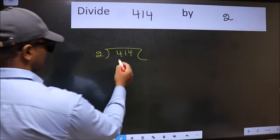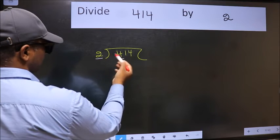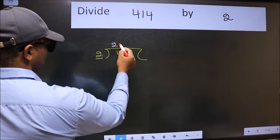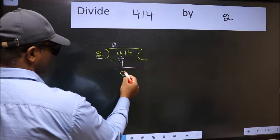Next. Here we have 4 and here 2. When do we get 4 in the 2 table? 2 times 2 is 4. Now we should subtract. We get 0.